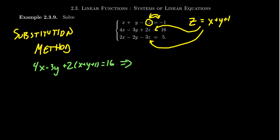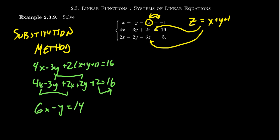We then want to simplify this expression here. So we get 4x minus 3y. Distribute that 2, we're going to get 2x plus 2y plus 2. This equals 16. Combining like terms, the 4x and 2x combine to give us 6x. The y terms combine to give us negative y. And we're going to move the 2 to the other side and get 16 minus 2, which is 14. So we get a new equation: 6x minus y equals 14.